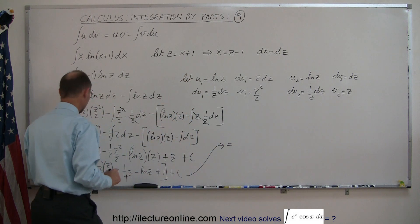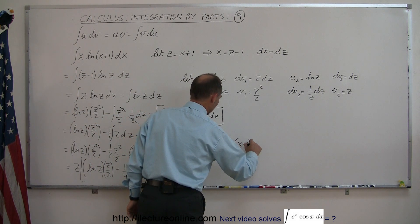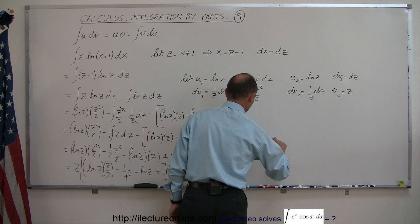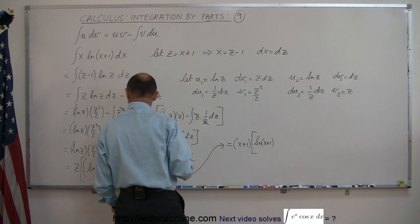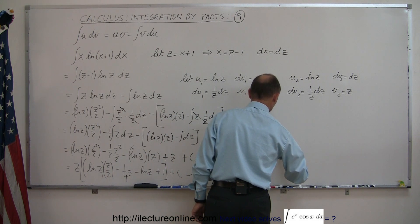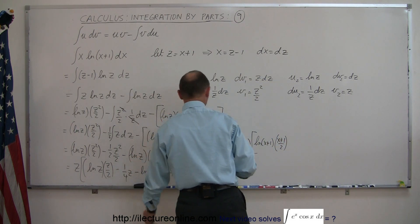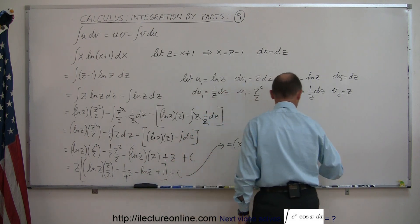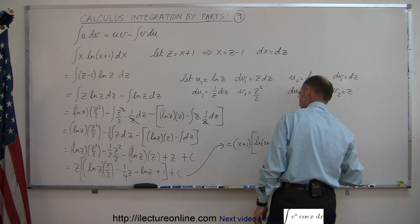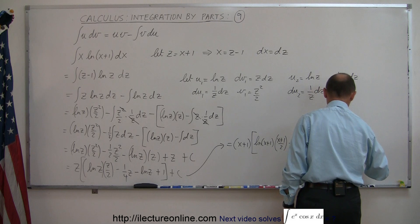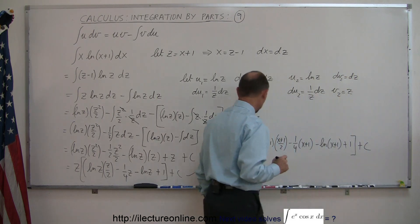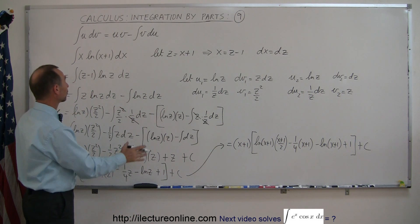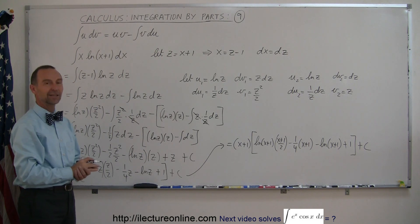So this equals the quantity x plus 1, times the natural log of x plus 1, times the quantity x plus 1 over 2, minus 1 quarter times x plus 1, minus the natural log of x plus 1, plus 1, close bracket, plus a constant of integration. Don't forget to go back and express your solution in terms of the original variable x. And that's how you do that problem.